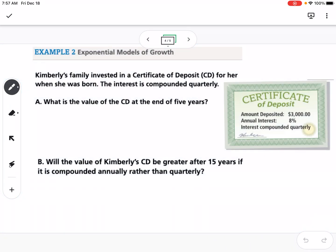So this example says Kimberly's family invested in a certificate of deposit, a CD, for her when she was born. The interest is compounded quarterly. The amount deposited, the principal, was $3,000. The interest rate is 8%, and it's compounded quarterly. And we want to know how much will she have at the end of 5 years.